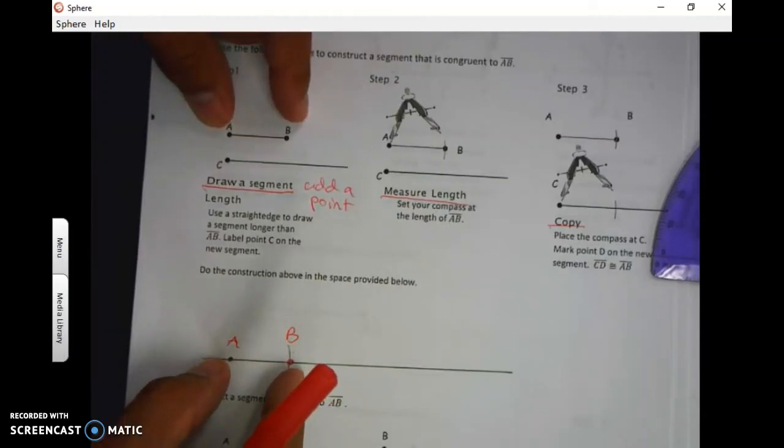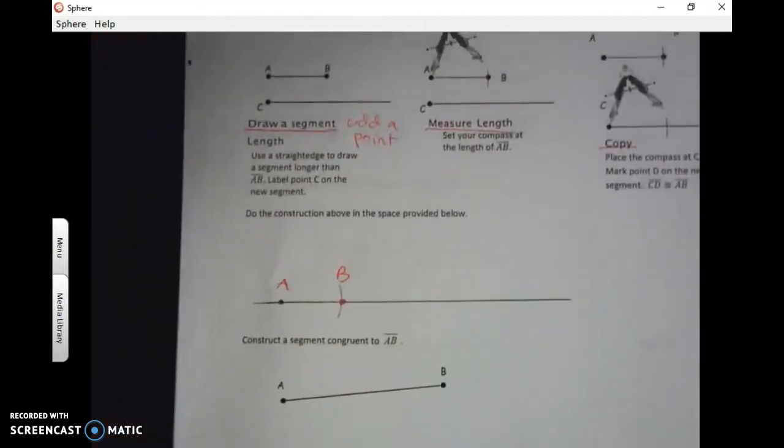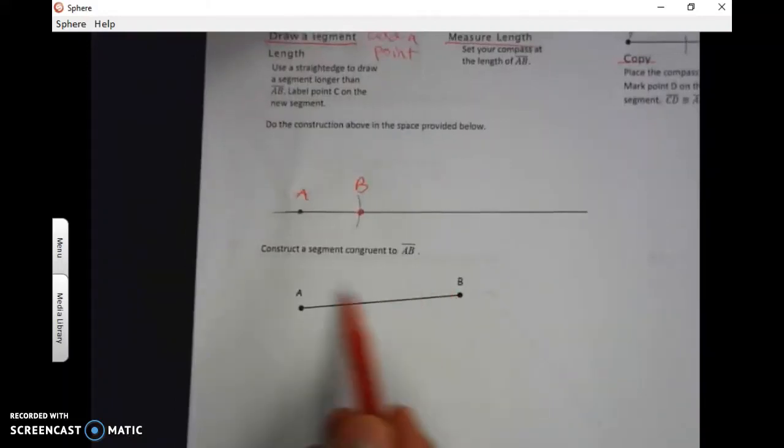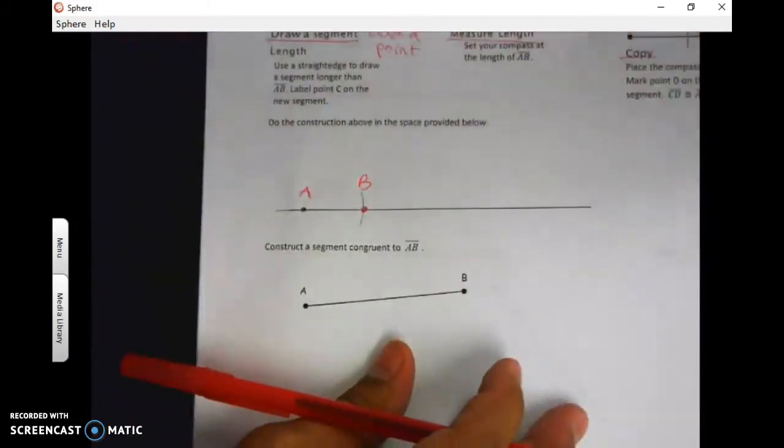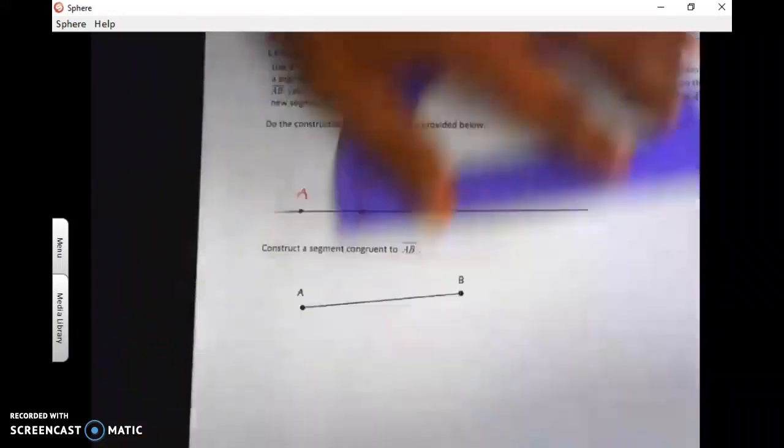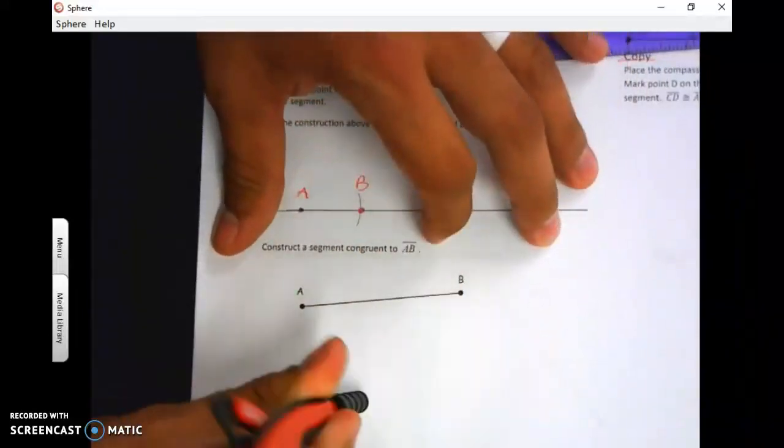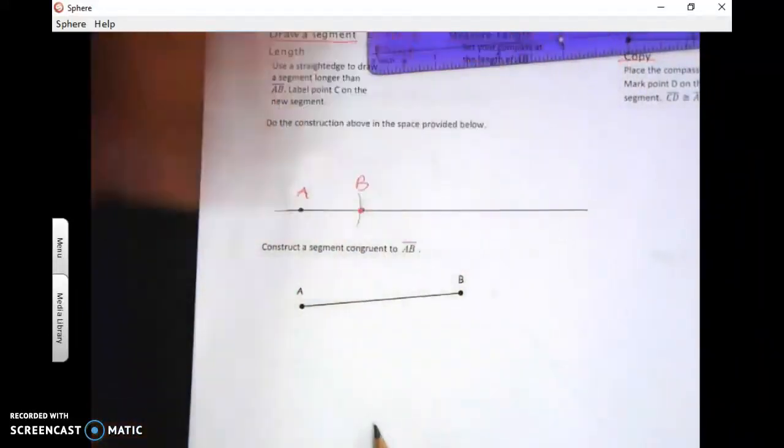So what I want you to try is at the bottom, I want you to try to copy this AB again. Step one: I'm going to go down here, I'm going to draw a long segment, put a point on it. All I got to do next is measure AB and mark it, and now I have my new AB.